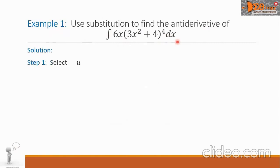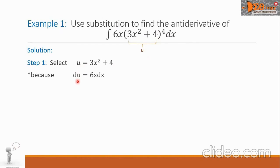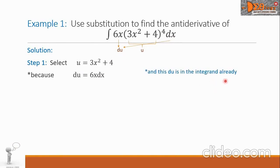For our solution, Step 1 is to select u. Let us select 3x squared plus 4 as u, and take the derivative of this expression. So we have du equals 6x dx. Analyzing the integrand, the 6x and dx is the value of du, and we see that du is already in the integrand.